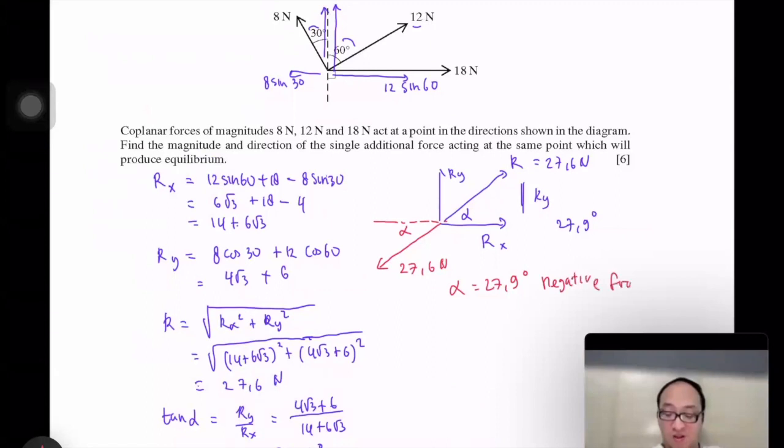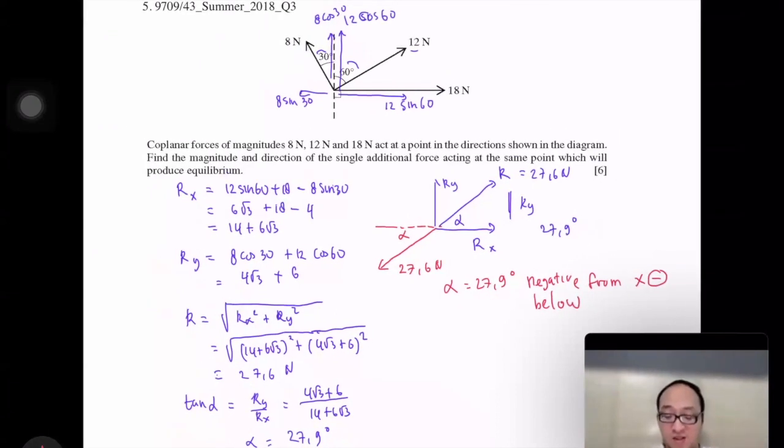From x-axis. Negative here means below. So we can say below x-axis. So this will make our system equilibrium.